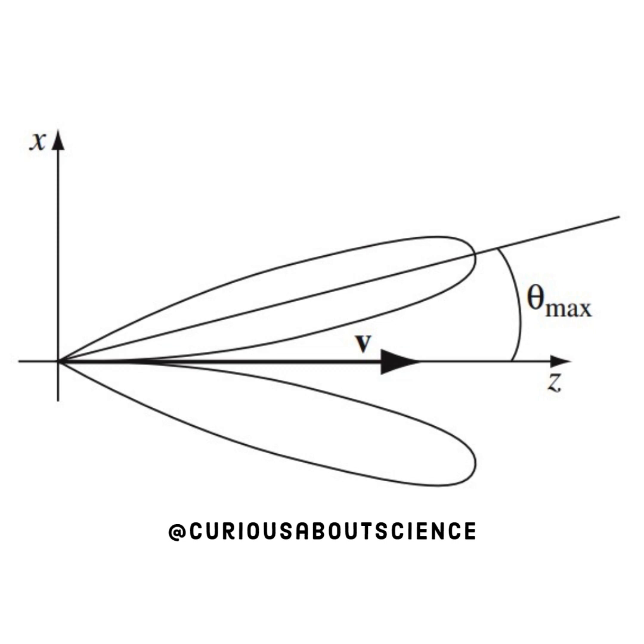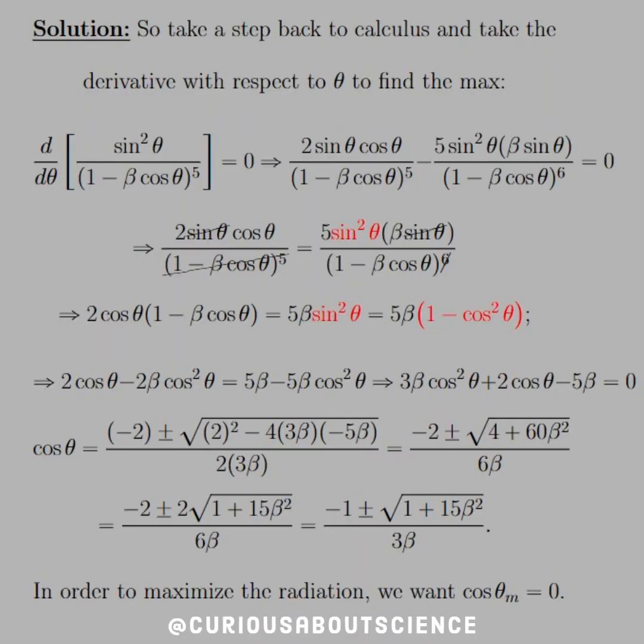This concept will come back again. But what we're seeing here is that we have to find that theta max now. This is what we're looking for. How does the emission correspond when we travel really fast since it doesn't happen in the same direction as the movement?